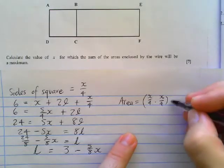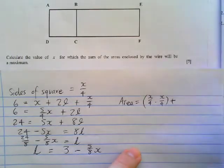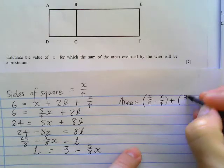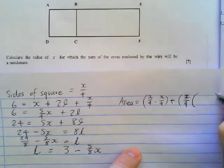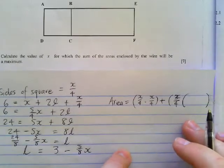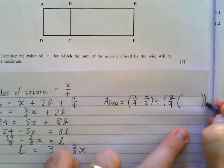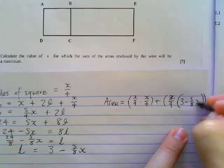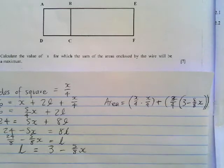Then plus the area of the rectangle is going to be length times breadth. So we've worked out our breadth already, we know that to be X over 4. And our length, which we've worked out now in the previous step, is going to be 3 minus 5 over 8X.